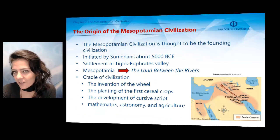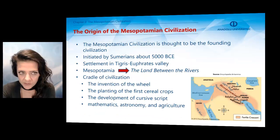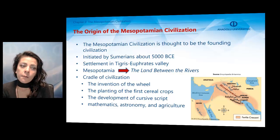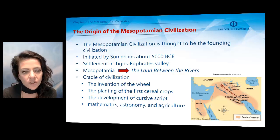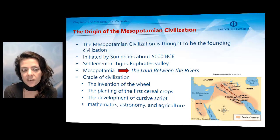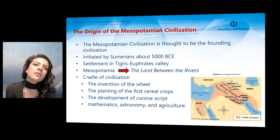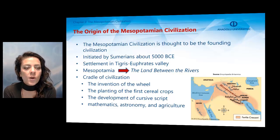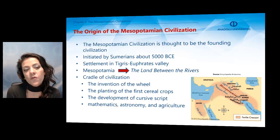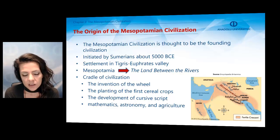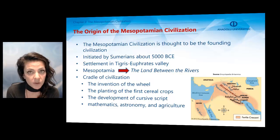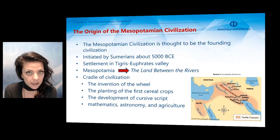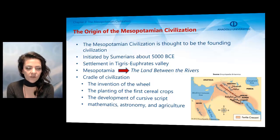Let us start with the origins of this ancient civilization. The Mesopotamian civilization is thought to be the founding civilization. It was initiated by Sumerians about 5000 BCE, and its geographical settlement was in the Tigris-Euphrates Valley. Mesopotamia means the land between the rivers — between the two rivers — so it can be considered as the cradle of civilization.